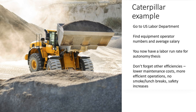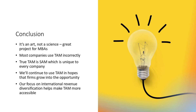Then there's a Caterpillar example. We were trying to figure out the heavy equipment autonomy thesis, so we went to the U.S. Department of Labor, looked up equipment operators — how many are there, what's their average salary — and came up with a labor run rate for the autonomy thesis for heavy equipment of over $50 billion. But don't forget other efficiencies like lower maintenance costs, more efficient operations, no smoke or lunch breaks, less tire wear, and of course increased safety. All that needs to be considered when looking at total addressable market.